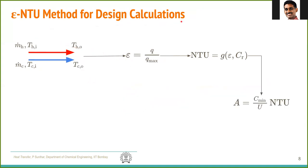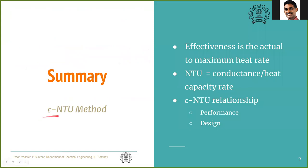The ε-NTU method can also be used for design calculations, though the LMTD method is more commonly used there. In design, all four temperatures are known or calculable, but the area is unknown. The procedure is reversed: first calculate ε from the known actual q and theoretical q_max; then use the inverse relationship — with ε and C_r = C_min / C_max known — to calculate NTU; and finally determine the area from NTU = UA / C_min.